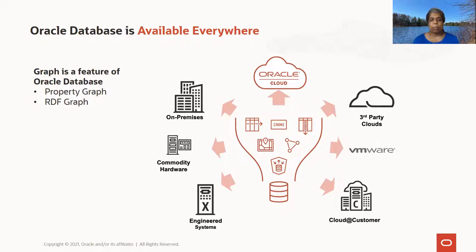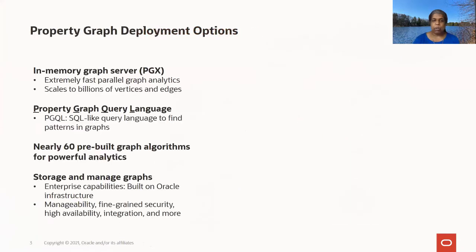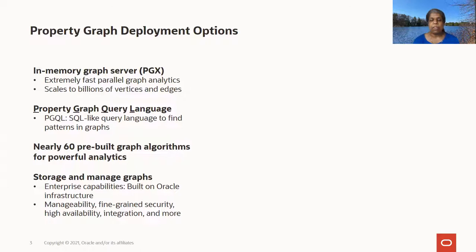The Graph feature supports two graph models: the property graph model and the RDF graph model, and both can be deployed in all of these scenarios. We'll focus this module on the property graph feature. It includes an in-memory parallel graph server for extremely fast graph analytics and queries, support for the property graph query language — a SQL-like language — nearly 60 pre-built graph algorithms, all built on the enterprise capabilities of Oracle Database.